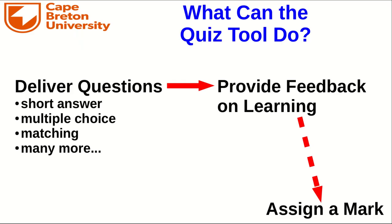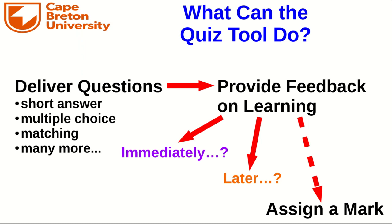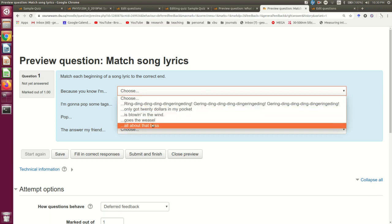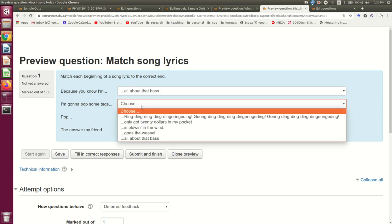The first thing you should start thinking about is which of those types of questions are going to be appropriate for checking the learning that the students are doing. Next, you need to think about when you're going to provide the feedback. The quiz tool is quite flexible — you can have them complete the whole quiz and get the feedback later, which is probably what you want if it's primarily about assigning a mark. But if you're giving feedback, you probably want to give it immediately, and possibly have them get new questions or re-attempt questions they got wrong.